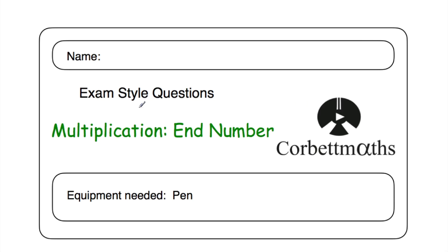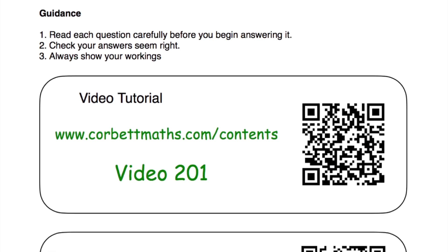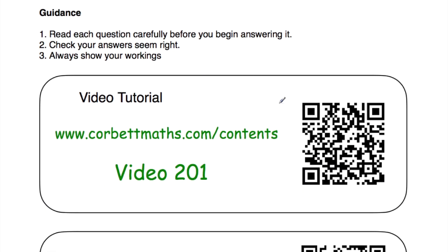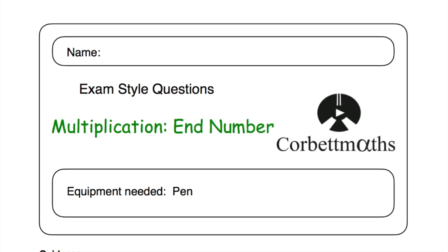Welcome to this Cobra Mavs video. In this video we're going to look at the video solutions to the Cobra Mavs practice questions on multiplication and dealing with the end number. Whenever we're doing multiplication, what happens to that end number? If you need extra help, go to Cobra Mavs, videos and worksheet section, and scroll down to video number 201. Alternatively, you could scan the QR code. In this video we're going to focus on the video solutions to the practice questions, so let's get started.